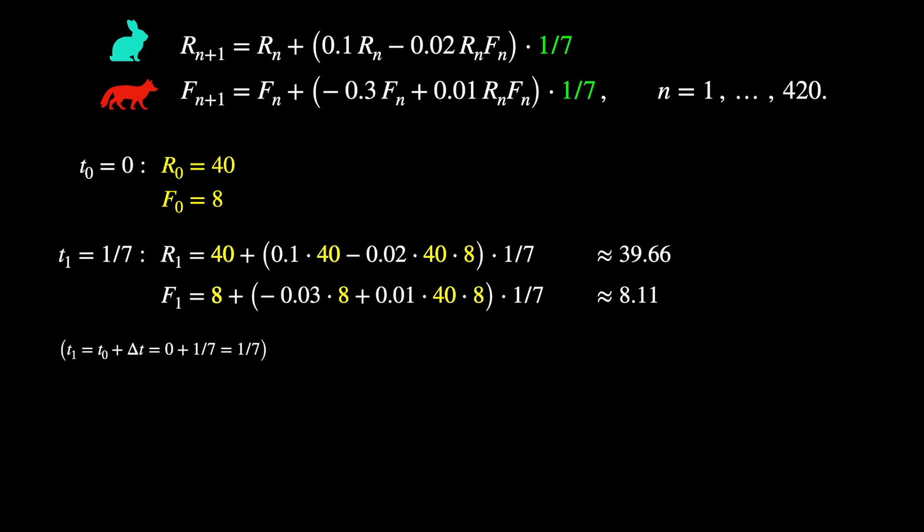Before I move on, go ahead and compute the next time value and predict what the equations for R2 and F2 will look like. Let's see if you were right. Every time we update our computation, time increases by 1/7. And then you may have thought I was going to write R2 equals 39.66, etc., but there are two reasons why I didn't do that. One is that I wanted to emphasize that the right-hand sides of this algorithm here are based on the previous values. So I have R1 and F1 on the right-hand sides. R1 is approximately 39.66 and F1 is approximately 8.11, but I wouldn't want to put those approximations in the right-hand side if I had better approximations in my numerical software. So if I do this in a computer, I would like to keep more decimals than just two.